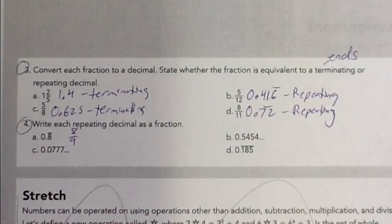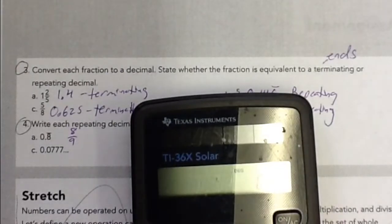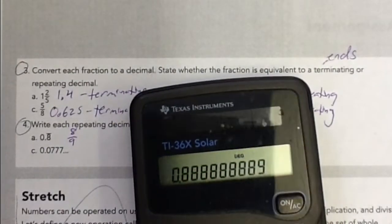And you can always double check them. Maybe it's like, I think it's 8 over 9. I could always double check. 8 divided by 9, and it is 8 repeating.